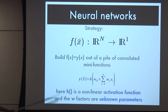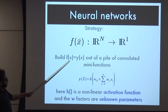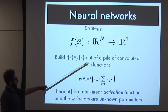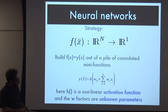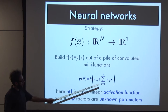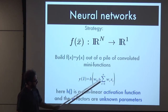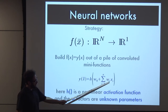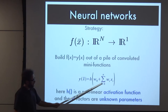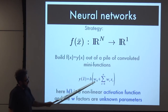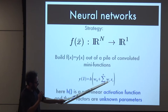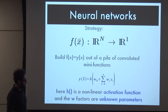What if we could build f(x) - sometimes called y(x) in these notes - out of a pile of mini functions that we convolute together? x is our input data, a vector of arbitrarily high dimensionality. We take that data, give each element a weight - a different weight for every element - then sum over it, potentially add a constant, and pass it through some nonlinear activation function. These weights are parameters of this function y.